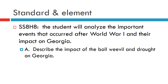The standard and element that this covers is History Standard 8: the student will analyze the important events that occurred after World War I and their impact on Georgia. Element A asks you to describe the impact of the boll weevil and the drought on Georgia.